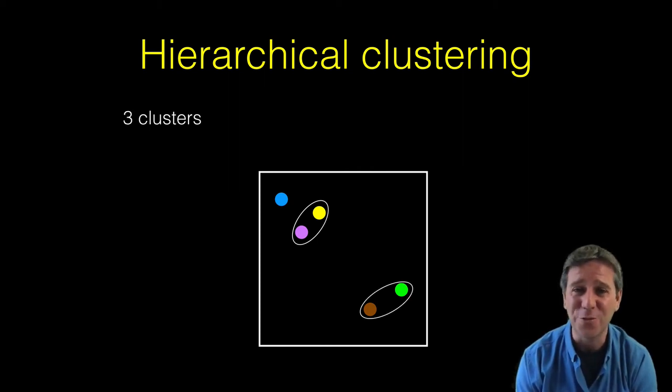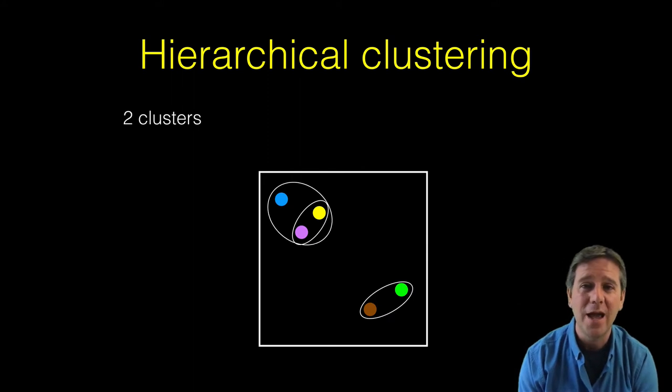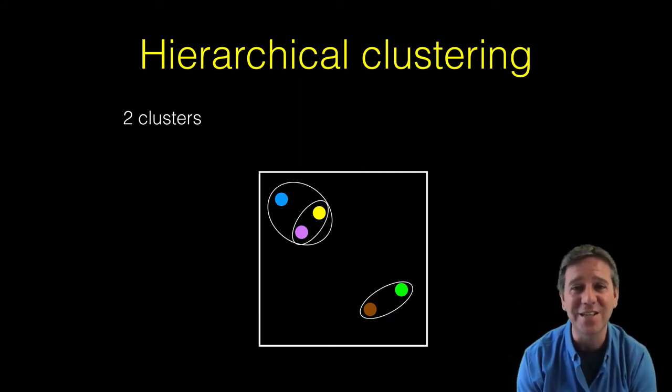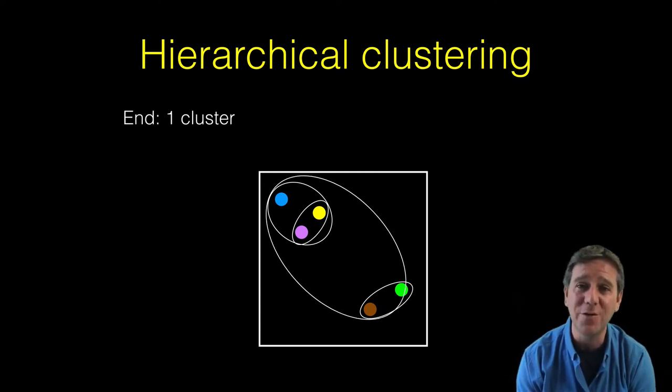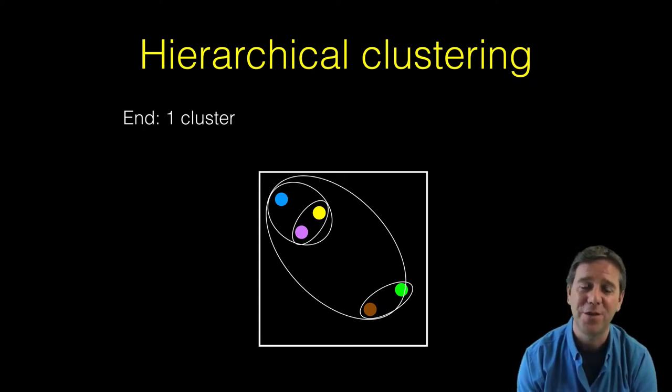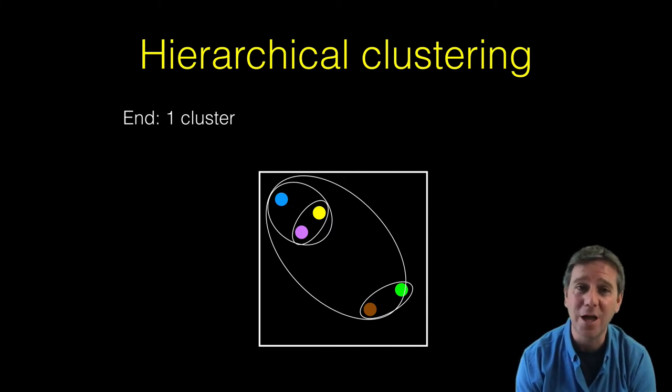We then group the next two points, in this case the green and brown, and now we have three clusters at this step. Then we link the blue into the pre-existing yellow and purple cluster to have two overall clusters. Finally, we arrive at the top when everything is in one final cluster. That's our bottom-up to the top approach.